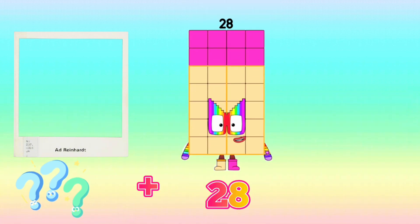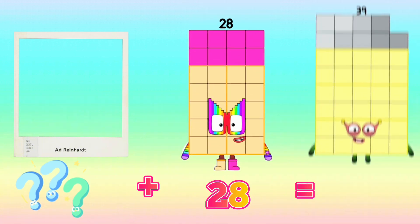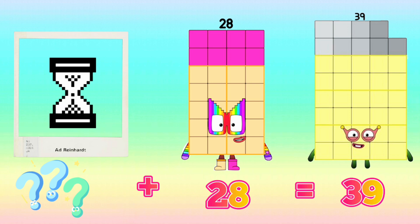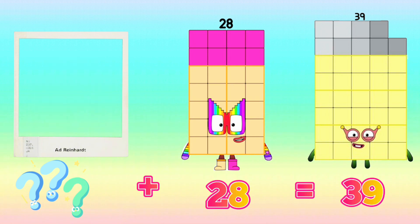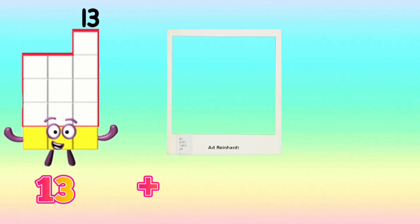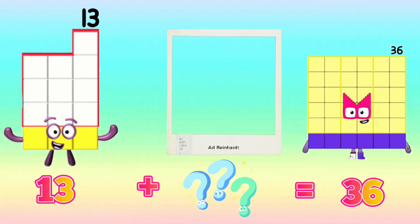What plus 28 is equals to 39? What is the missing addend? And the missing addend is 11. 11 plus 28 is equals to 39.